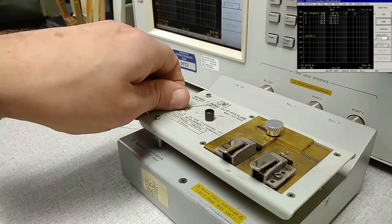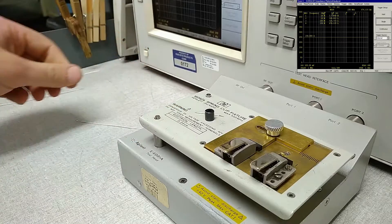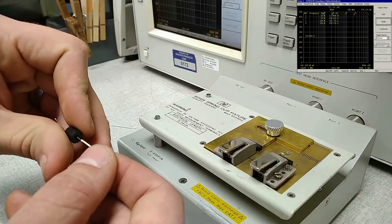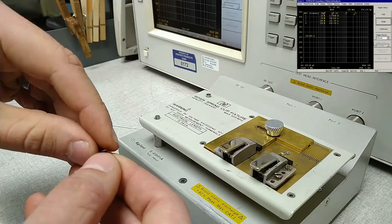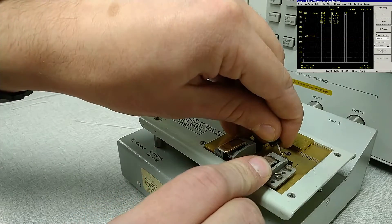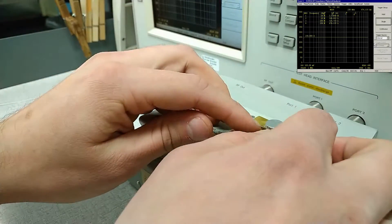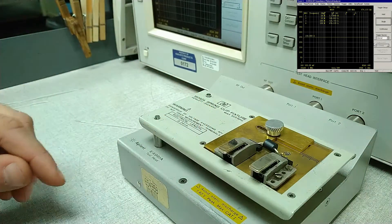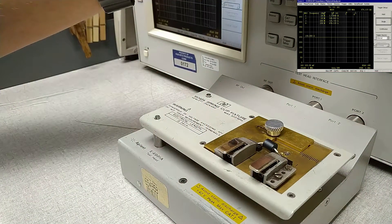So first thing we're going to do is put our cable through the core and connect our shield bead to the fixture. And now we're going to trigger a sweep.